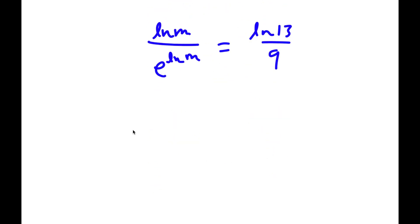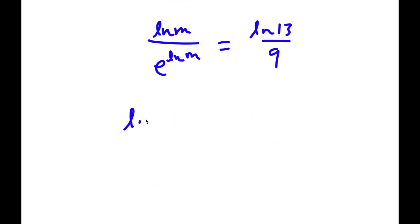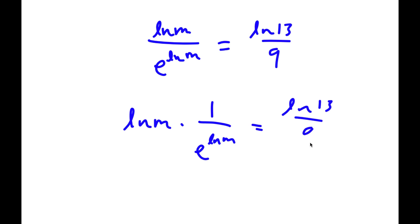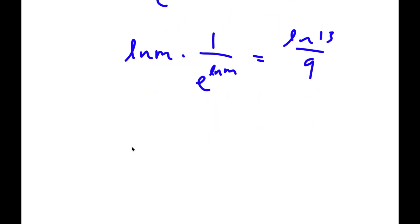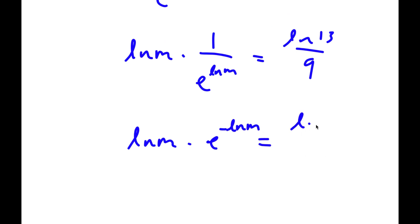Which is equal to ln 13 over 9. This is the same thing as ln m times e to the power of negative ln m, which equals ln 13 over 9.